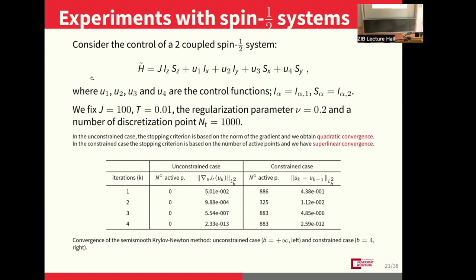This is the constrained case, where the box constraints on the control are active. I should also remark that in Newton methods, nobody is assembling a Hessian — there is no need to store a Hessian. It is always about the action of a Hessian on a vector, and this is done by twice calculating a forward and backward linearized equation of the original state and the adjoint equation. There is no Hessian stored anywhere.